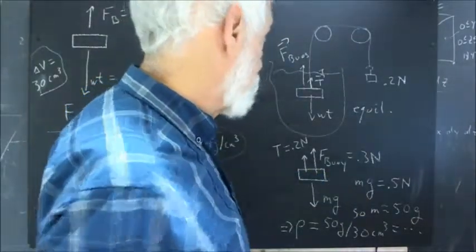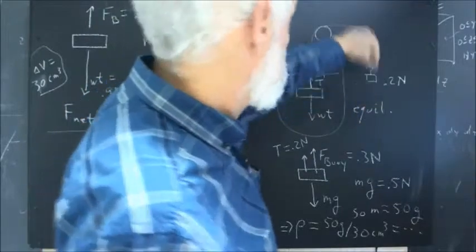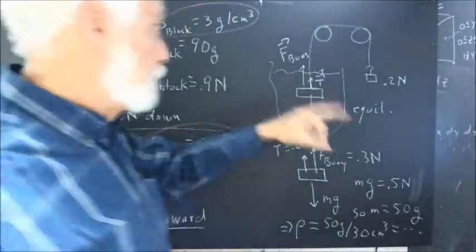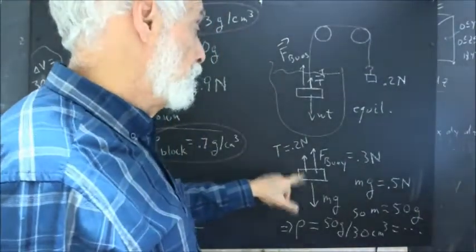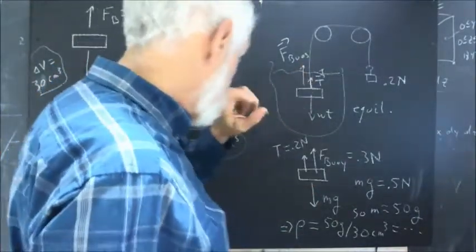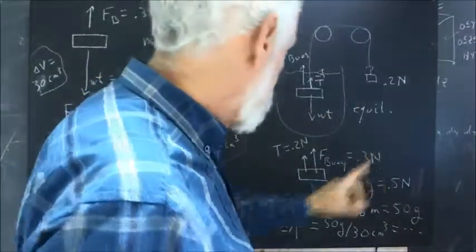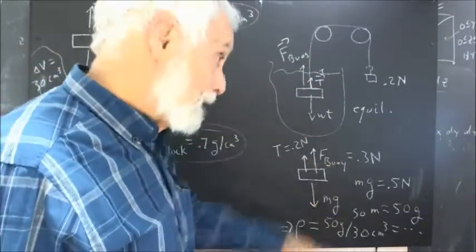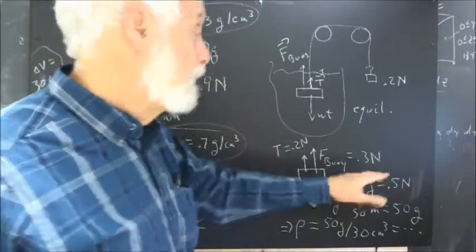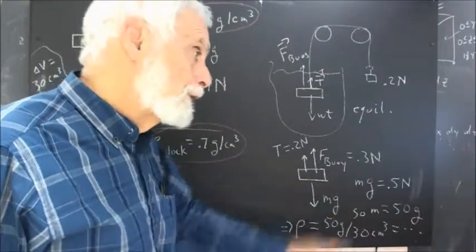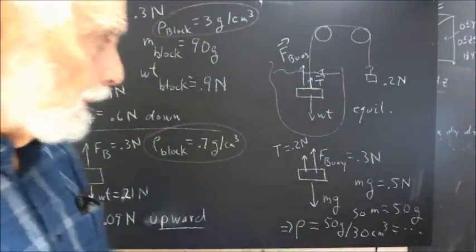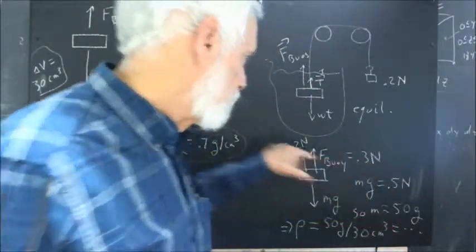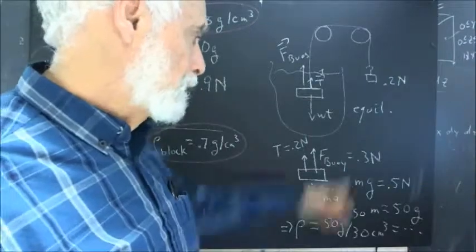Well, we know the buoyant force to be 0.3 newtons. This is in equilibrium, so the tension throughout this spring, assuming we have good pulleys, is 0.2 newtons throughout. So we have a tension of 0.2 newtons, which gives us a net upward force, a total upward force, of 0.5 newtons. Meaning that since this is an equilibrium position, the total downward force has to be 0.5 newtons. The only downward force is the weight, mass times the acceleration of gravity, and that has to then be equal and opposite to the upward forces we have here.